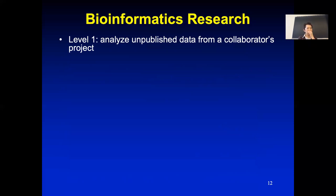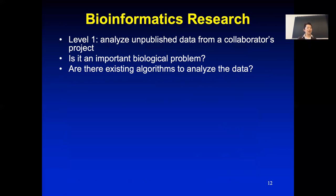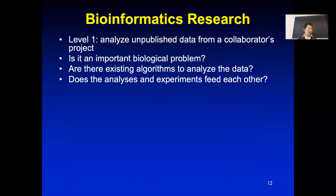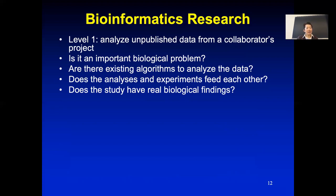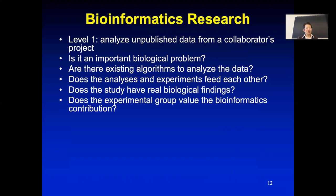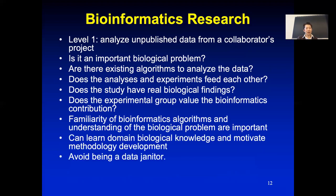What we are teaching in this course is mostly level one: how to analyze published or unpublished data from a collaborator's project. When a collaborator asks for help, you ask: is this a biologically important problem? Are there existing algorithms to analyze the data? Is the experiment well-designed? Is this a good collaboration where analysis and experiments feed each other? The experimentalist should be able to change their study plan based on results — more profiling one way, or validation another.